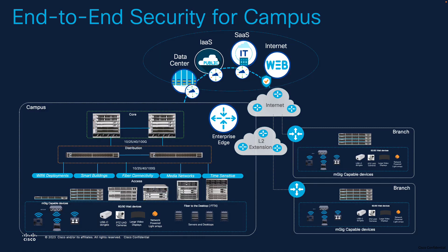From a transport security perspective, the very first requirement is establishing a secure connection or secure channel within your campus itself. That is where LAN MACsec comes into the picture, which provides point-to-point or hop-by-hop encryption within the devices in your campus or branch network.